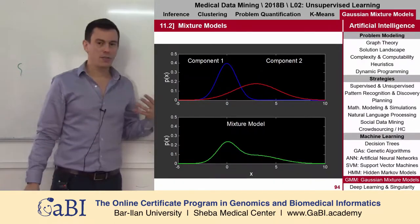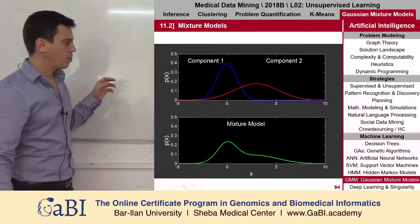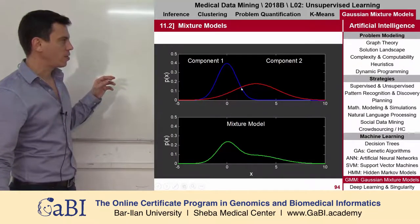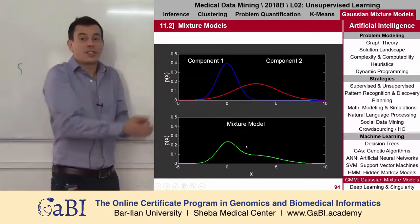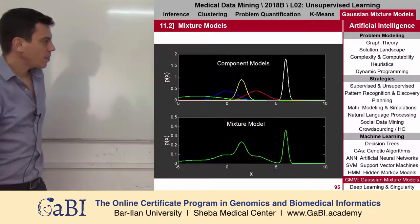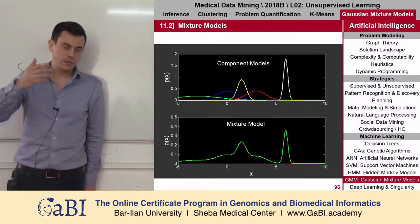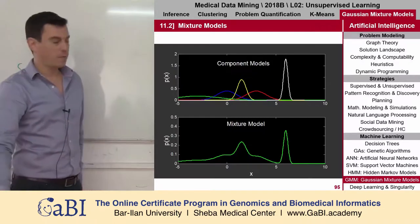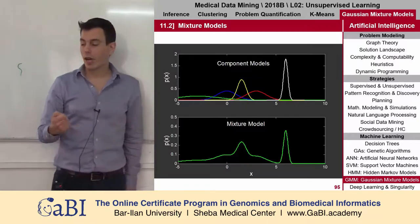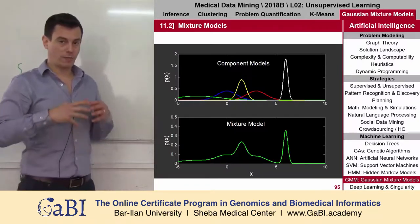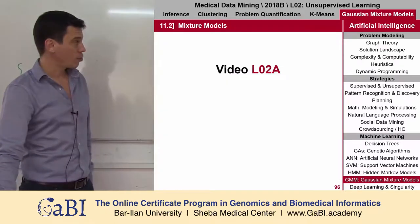And of course it cannot look so nice. It can look even more complex — this is one Gaussian, this is another Gaussian, and when you look at the data, this is what you see. There could be not only two modes; it could be many different components together. This is what we call the mixture model.